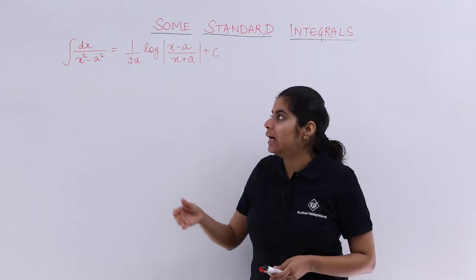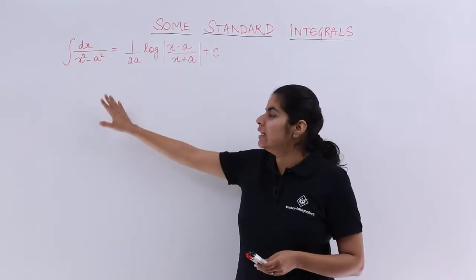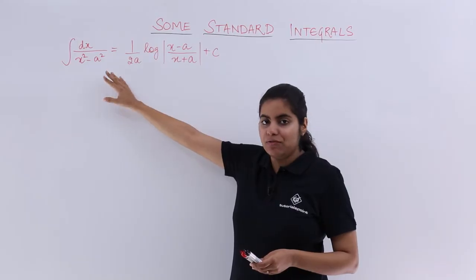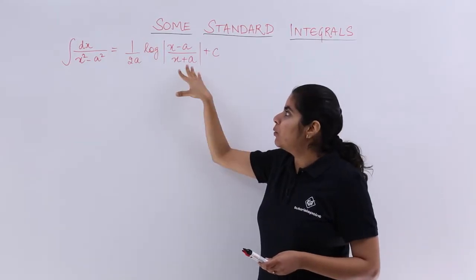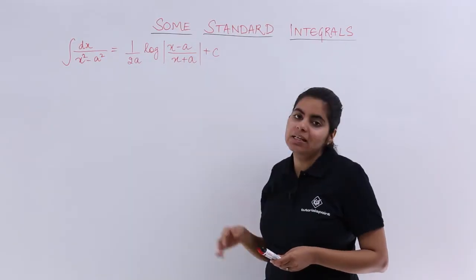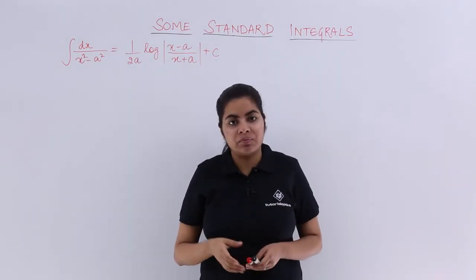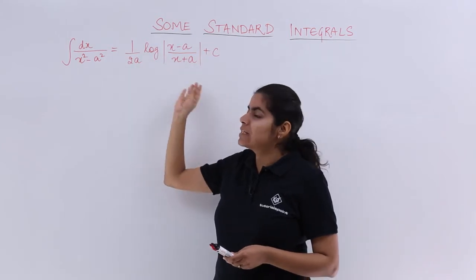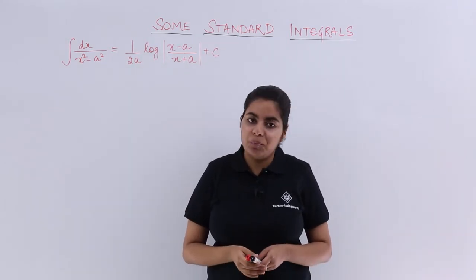So the first formula in some standard integrals is integration of 1 upon x square minus a square with respect to x, and the formula goes as follows: it is equal to 1 upon 2a log x minus a upon x plus a plus c.